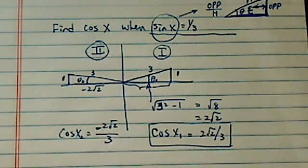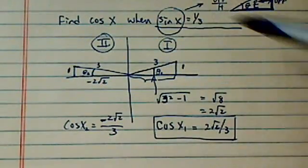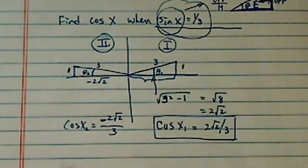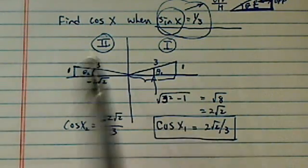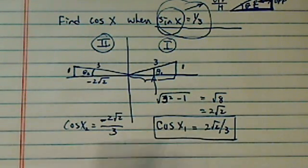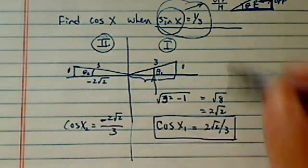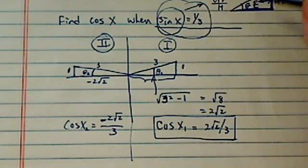So without knowing which angle specifically it's given here, we do have to take care of both of the angles, quadrant 1 and quadrant 2. So cosine has two values, depending on which one of the angles actually gives you the positive one-third.